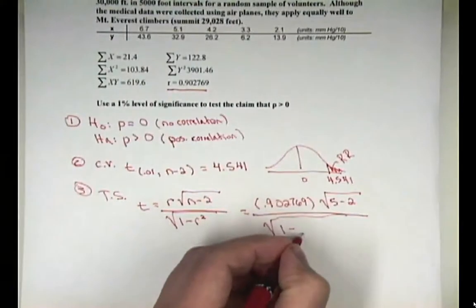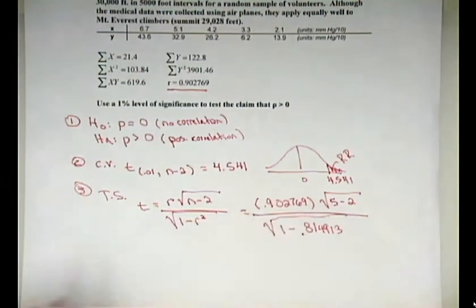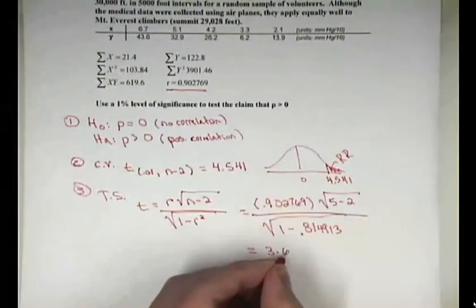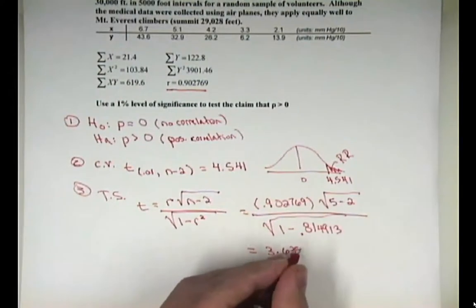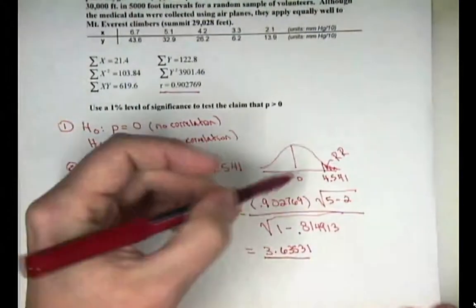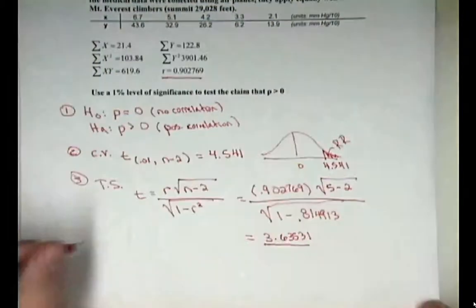r was .902769 times the square root, n is five minus two, all over the square root of one minus, now you can put in r and then square it. I already squared it, so I'll put in the squared version of r, which is .814913. Calculate all that out. Remember to watch your calculation steps. I get a test statistic of 3.63531. And where does that fall in our rejection region picture? It does not fall in the rejection region.